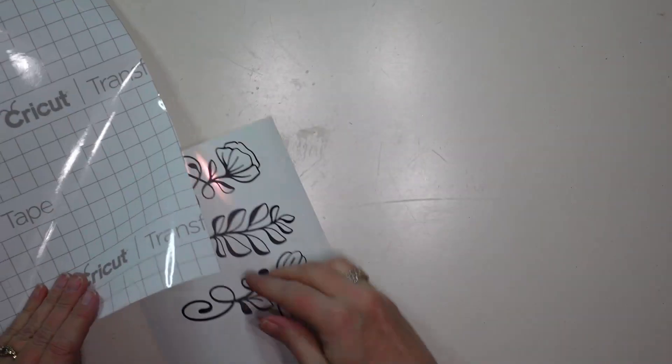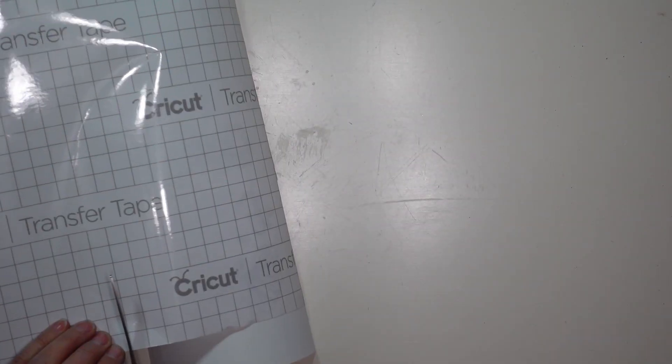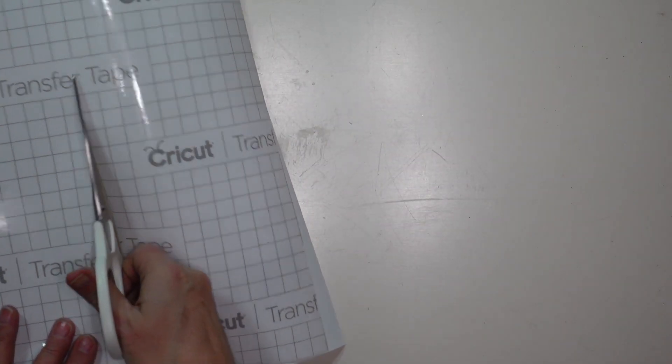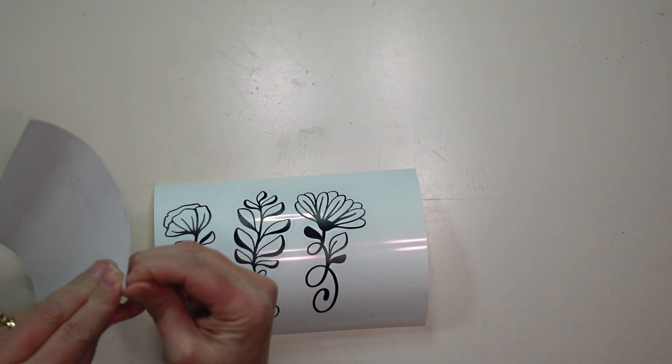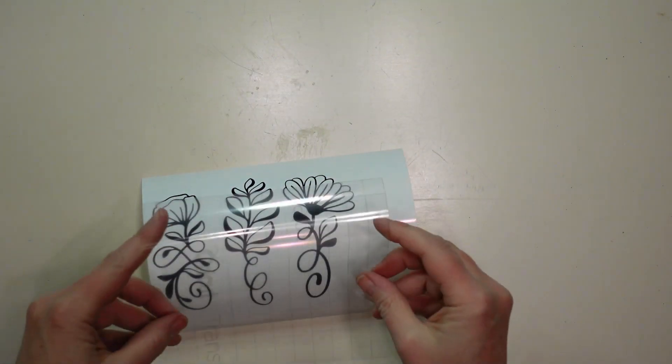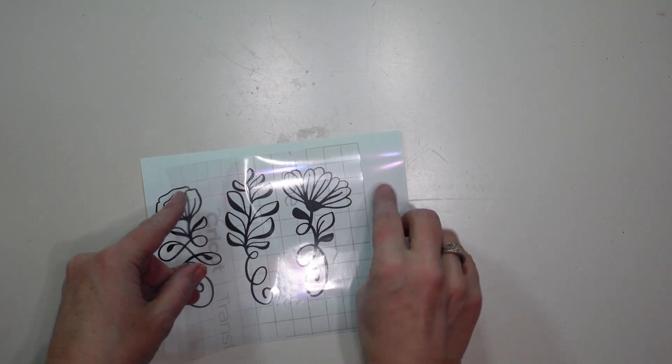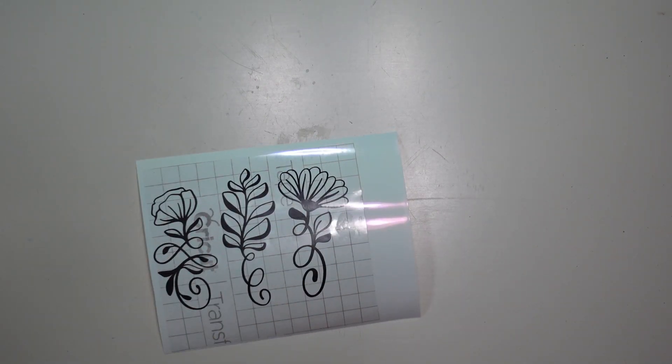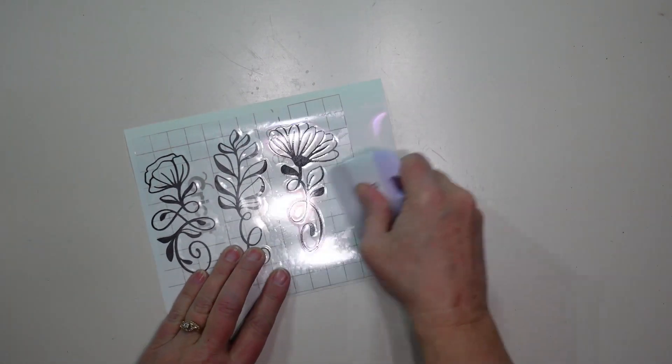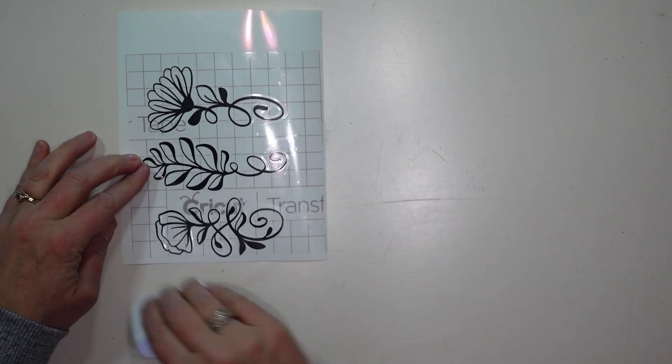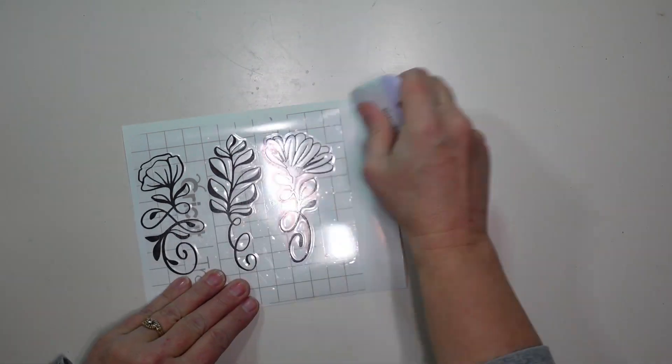Then I'm going to take some transfer tape and cut it the size of my design. Then I will peel the backing off of the transfer tape and apply it to the design and I'm going to just make sure that I get as few wrinkles and bubbles as possible. And then I will go over it with my burnishing tool just to make sure that it is adhered to the design very well.